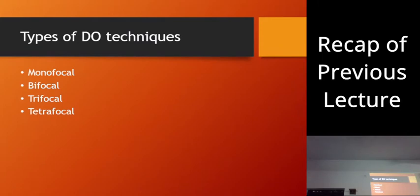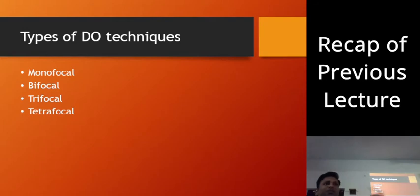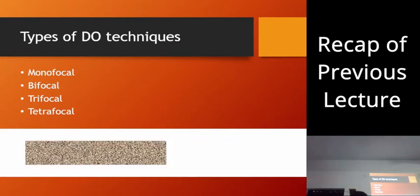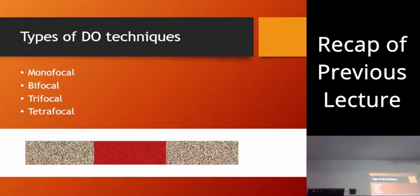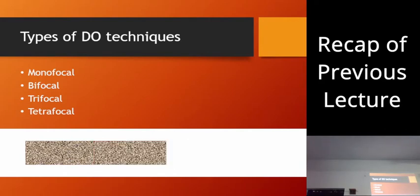Then we come to different techniques: monofocal, bifocal, trifocal, tetrafocal. Depending on the site where new bone formation occurs — in distraction osteogenesis we are creating new bone — if we cut the bone and pull them apart, there's only one side where new bone formation is occurring. This is monofocal.